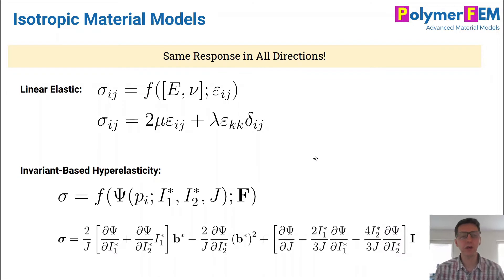So let's start talking about isotropic material models. The easiest way to deal with this is to use linear elasticity where the stress is given by some function of the material parameters, the elastic constants Young's modulus and Poisson's ratio, and the applied strain. You can explicitly write that relationship in this way and other ways too.